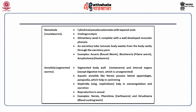Phylum nematoda, otherwise known as roundworms, are cylindrical pseudocoelomates with tapered ends that also undergo ecdysis. The alimentary canal is complete with a well-developed muscular pharynx. An excretory tube removes body waste from the body cavity through the excretory pore. Examples include ascaris, wuchereria and ancylostoma (hookworm).